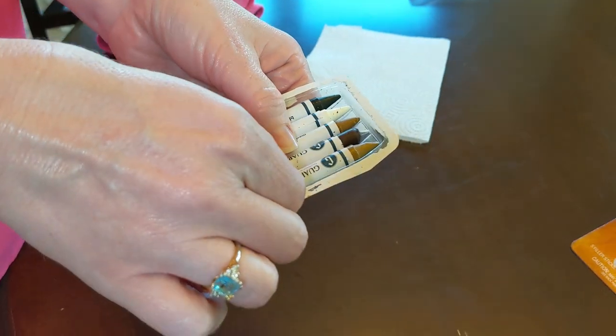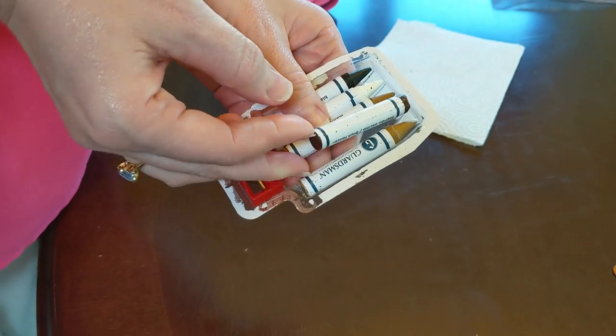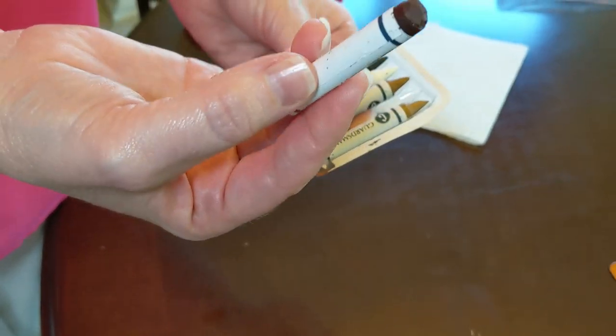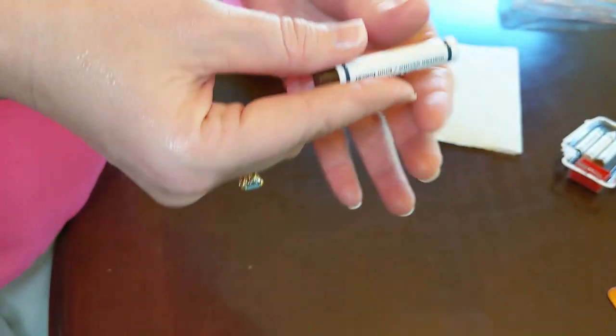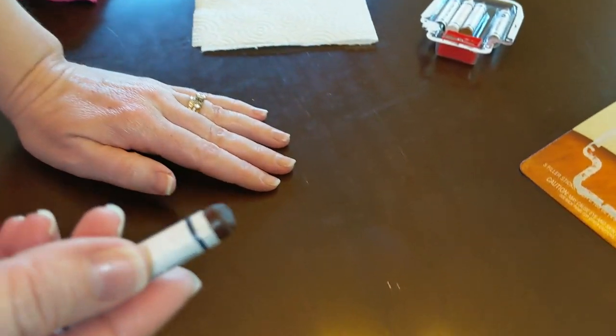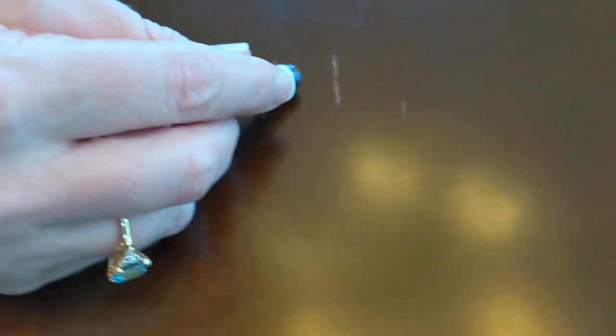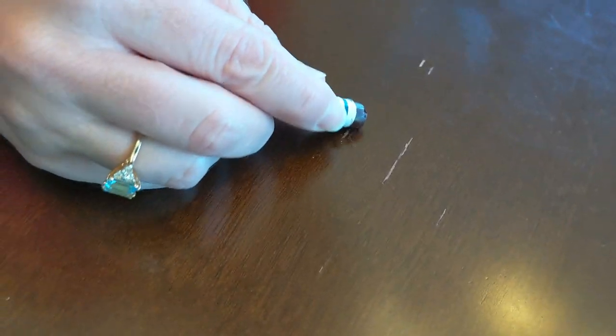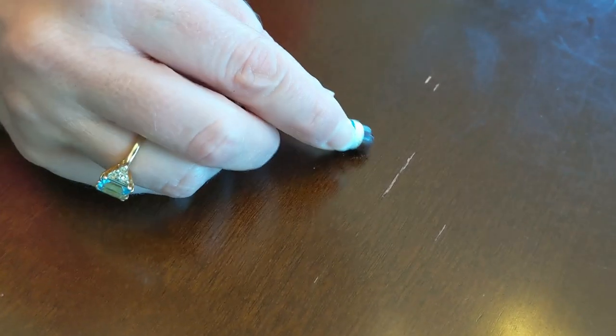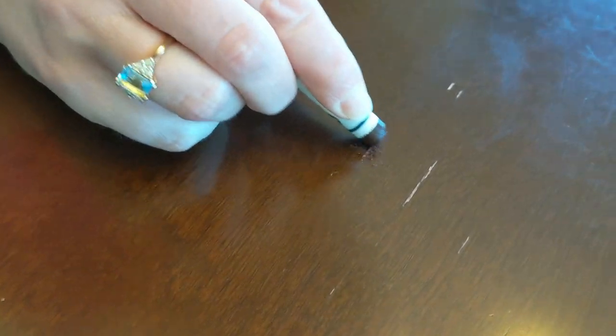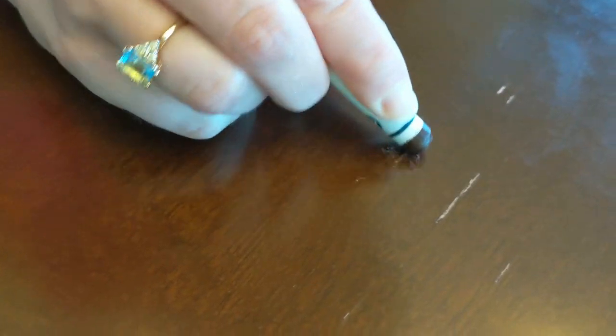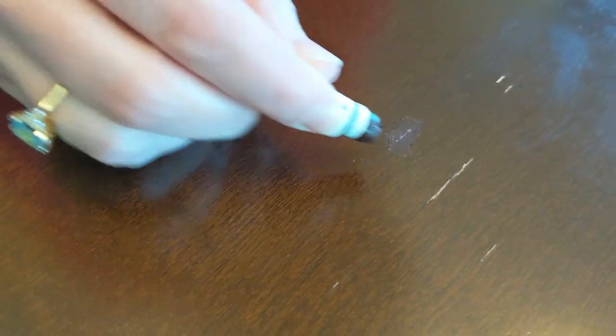Once this is dry then you just pick the wax crayon that most closely matches. You can tell that I use this one quite a lot, it's the darker wood. And you will just gently rub it back and forth over the scratches. You can see as I rub it back and forth it fills it a little bit more and a little bit more. I'm just going to go through and cover all the scratches.